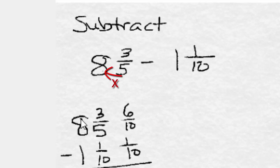8 and 3 fifths, if we multiply 5 times 8, we get 40, and add 3, we get 43 fifths. And for 1 and 1 tenths, 10 times 1 is 10 plus 1 is 11, so we get 11 tenths. Then we would get a common denominator of 10.